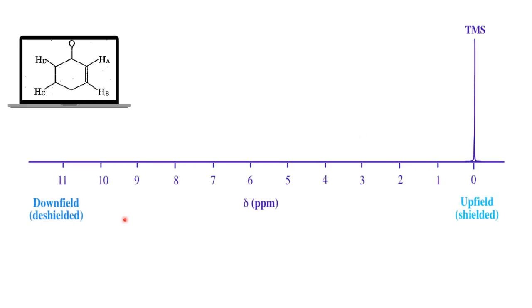We would have studied about shielded and deshielded protons in our fundamentals of NMR spectroscopy. Here, the chemical shift values are shown, with TMS used as a reference compound. Any value seen at a smaller chemical shift value is said to be upfield, and any value seen at a higher chemical shift value is called downfield. Protons at downfield are deshielded, and protons at upfield are shielded.